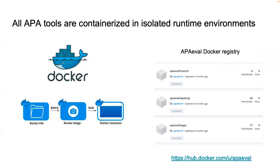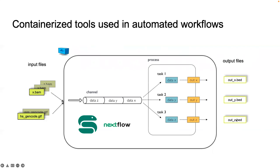Right now, all the containerized tools for APAVal are up on the APAVal Docker registry. These containerized tools are used in the automated workflows, in which input BAM and GTF annotation files are taken as inputs. The automated workflow written in Snakemake or Nextflow automatically preprocesses the input files, runs the tool with tasks running in parallel whenever possible, and finally post-processes the output files into BED files. So the whole process from input to output is automated.